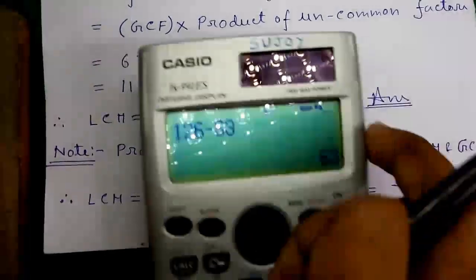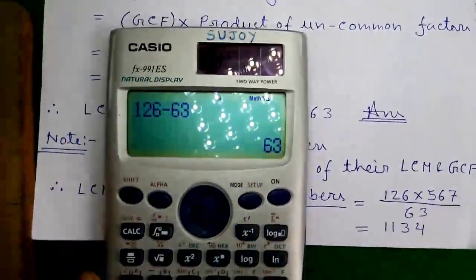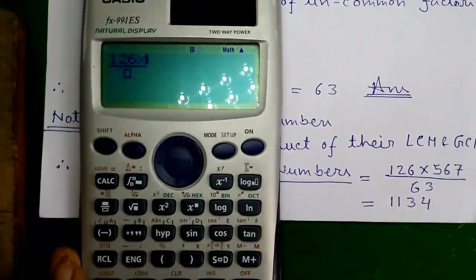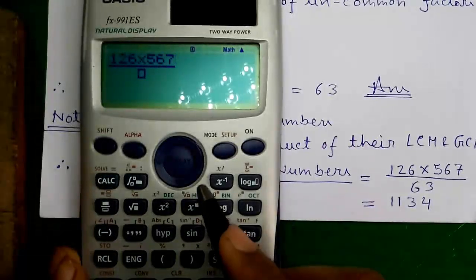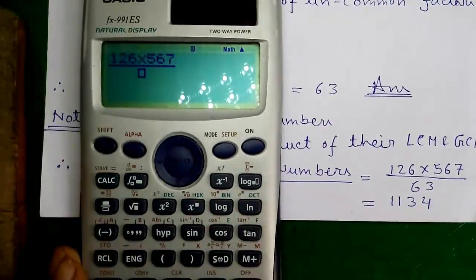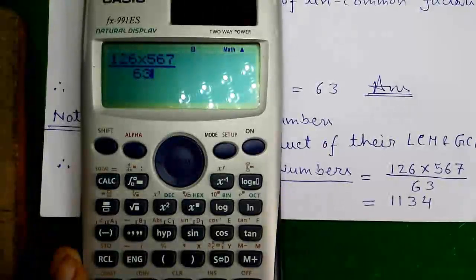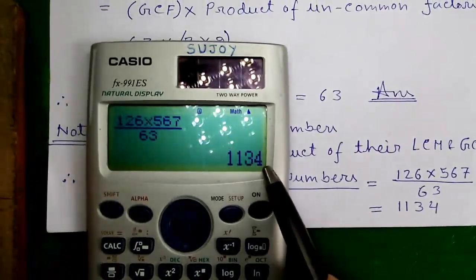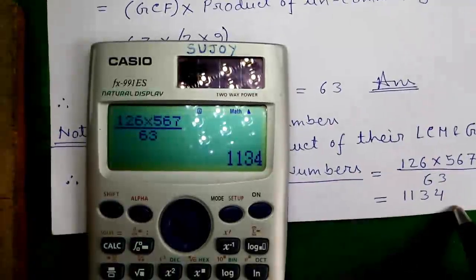Let's do it. For that I will use the fraction button. Press joystick right to get down, by 63, and press the equals button. That's equals to 1134. This is our required LCM. Isn't it cool?